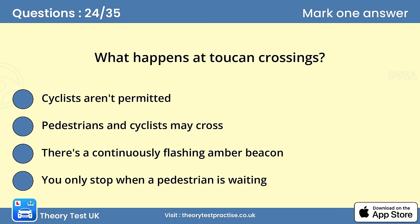Question 24. What happens at Toucan crossings? Toucan crossings can be used by cyclists and pedestrians. Some cycle routes lead cyclists to these crossings. Always look out for cyclists, as they're likely to be approaching much faster than pedestrians.